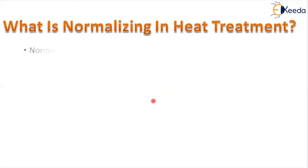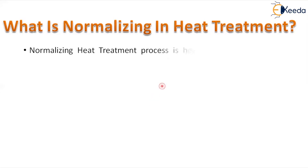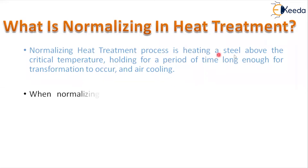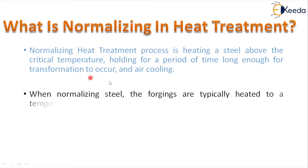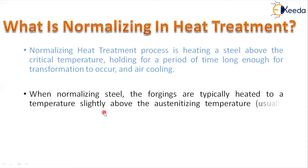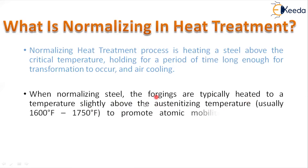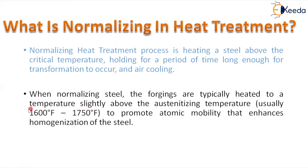In this normalizing heat treatment, the material is heated above the critical temperature, held for a period of time until the transformation occurs, and then cooled. The forgings are typically heated to what we call the austenizing temperature — the temperature at which the structure converts to austenitic — and held until that transformation completes, so that atomic mobility enhances homogenization.